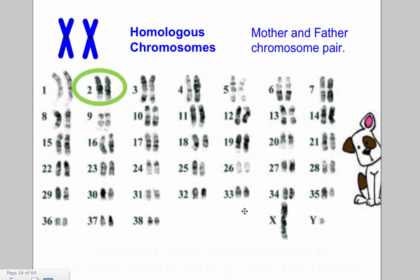All of these chromosomes that we can organize are going to come in pairs. The mother and the father pair are known as homologous chromosomes.